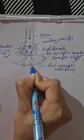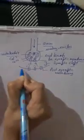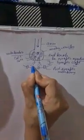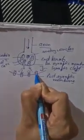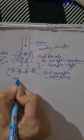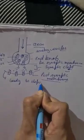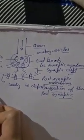Receptors are present on the post-synaptic membrane. These chemicals bind to the receptors present on the post-synaptic membrane, leading to the depolarization of this membrane. The depolarization of the post-synaptic membrane further leads to the depolarization of the second neuron. In this way, the nerve impulse travels from one neuron to another neuron.